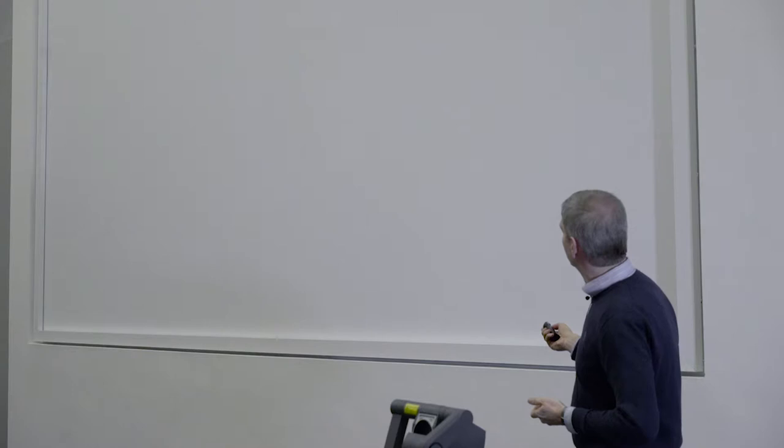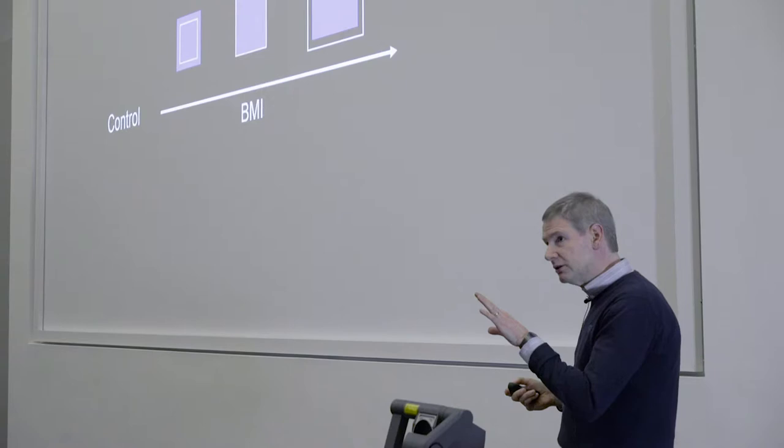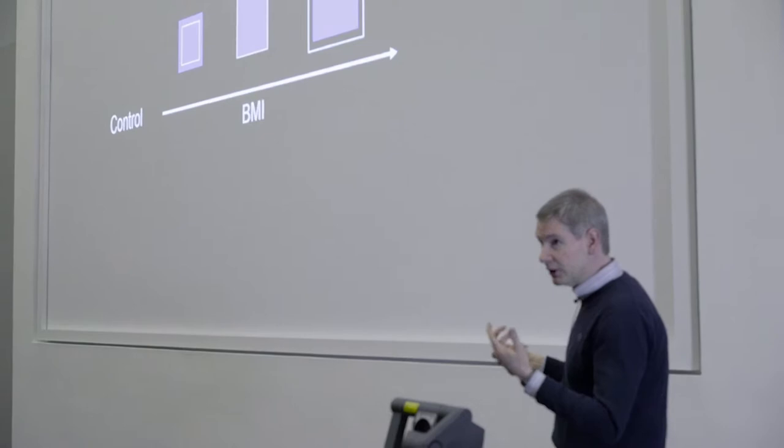So what does this mean? This means for control participants you're really good at judging body size for bodies in the middle range. If you had a thin body you tend to overestimate. If you have a large body you tend to underestimate.